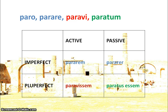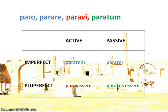In the pluperfect, the active pluperfect subjunctive is formed from the third principal part. It is essentially our perfect stem plus the letters -ISSE, which forms our perfect active infinitive, and then we add our active personal endings to make the pluperfect subjunctive.